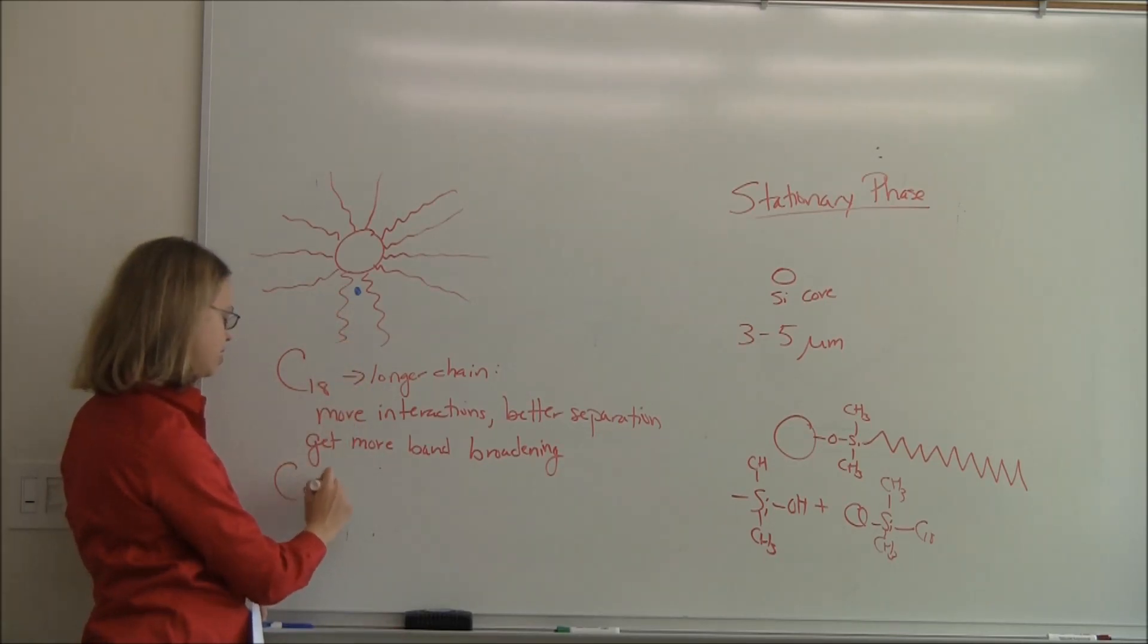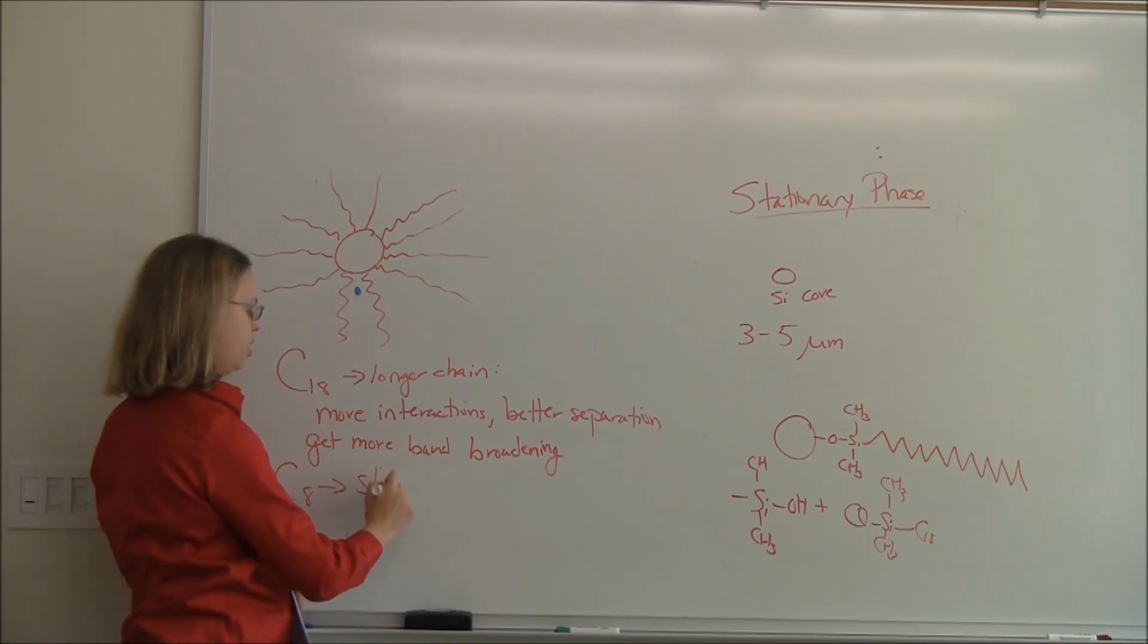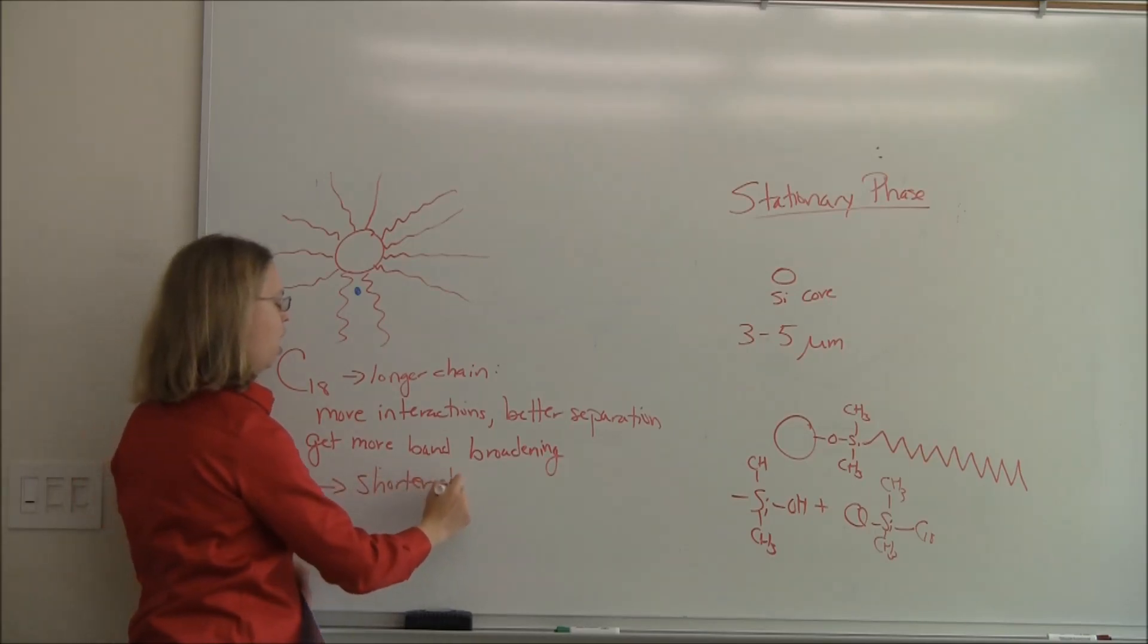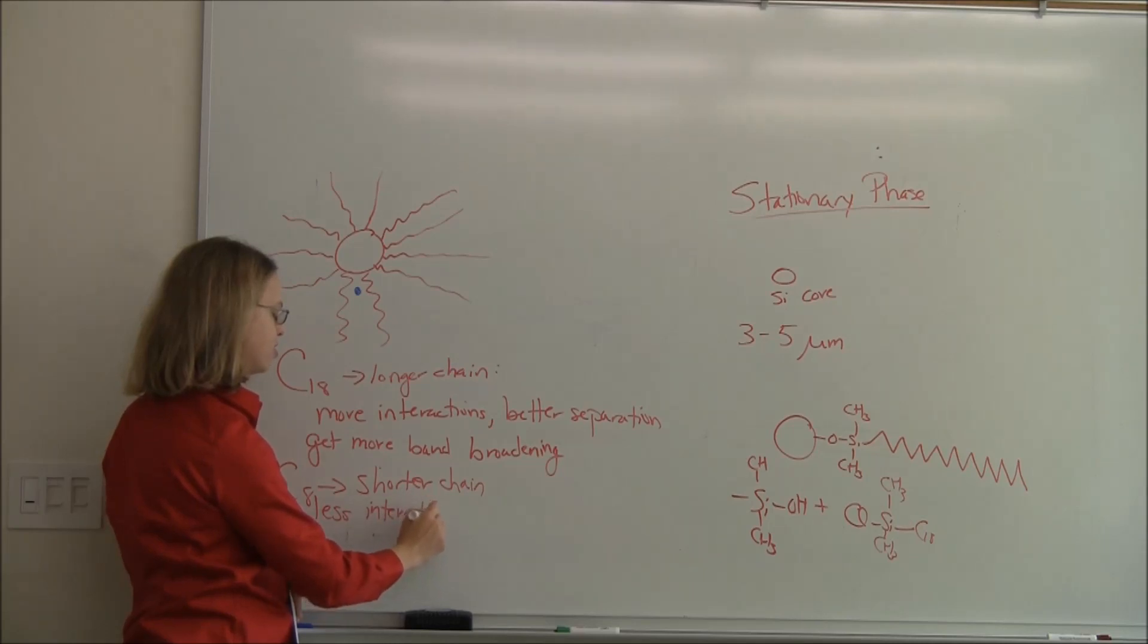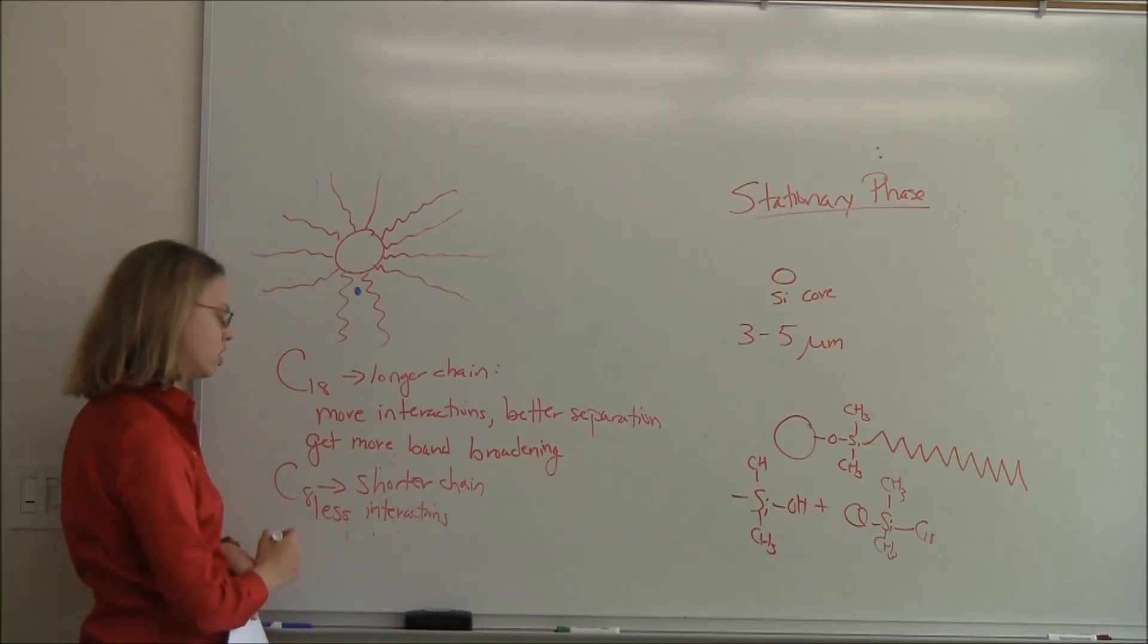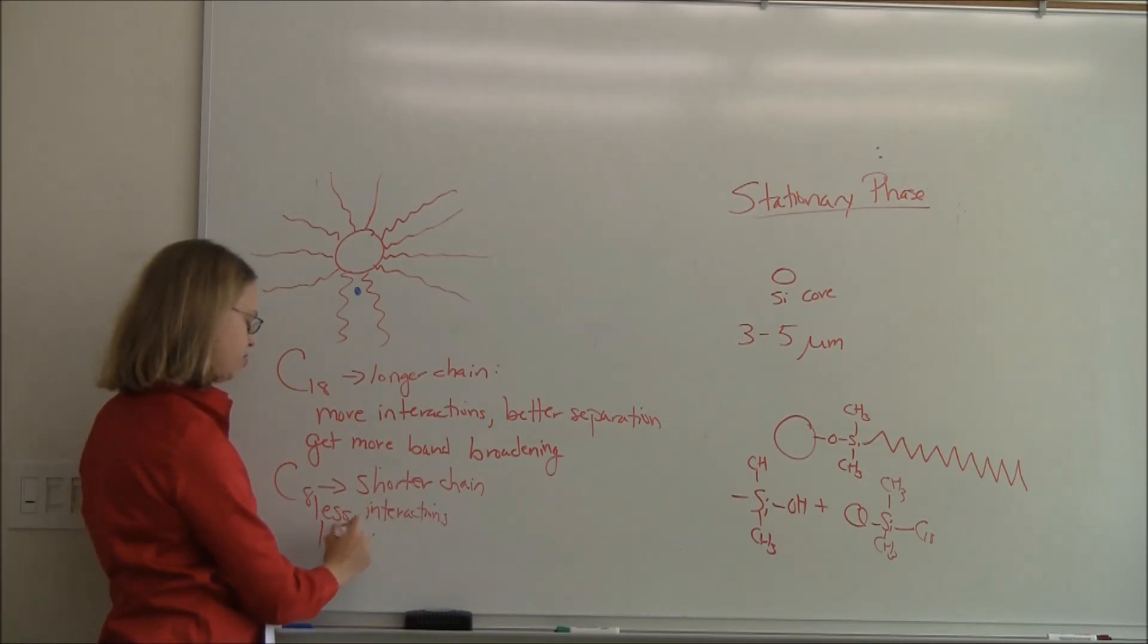If you had C8, you would have a shorter chain. But you also have less interactions. You have less of a non-polar group to have interactions. So your separation wouldn't be as good, but you would also get less band broadening.